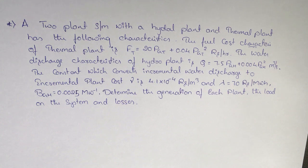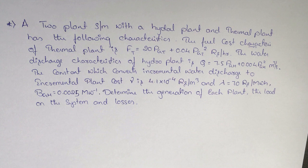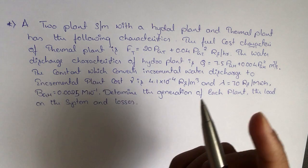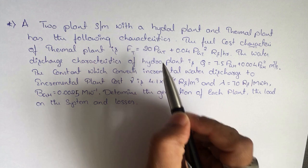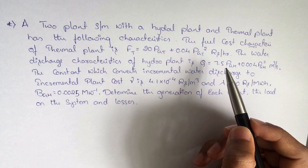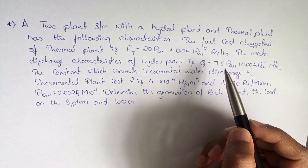Hello everyone. In this video we are going to discuss a problem on short-term hydrothermal scheduling using gamma and lambda iterations with the penalty factor. The problem we are seeing here is a two-plant system with a hydro plant and a thermal plant with the following characteristics.